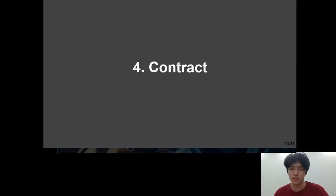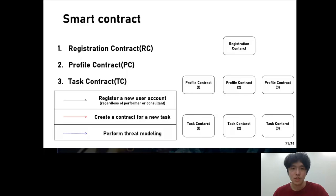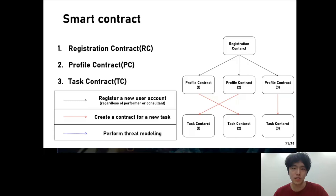The next chapter is the smart contract. Smart contracts are typically divided into three categories: registration contract, profile contract, and task contract — called RC, PC, and TC for short. The registration contract registers users to the blockchain network without distinguishing between stress modeling performers and security consultants. A profile contract is created through this contract, and it displays information about a user and the risk of the task being performed.